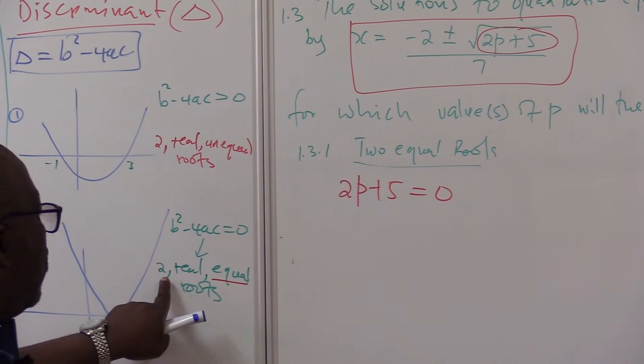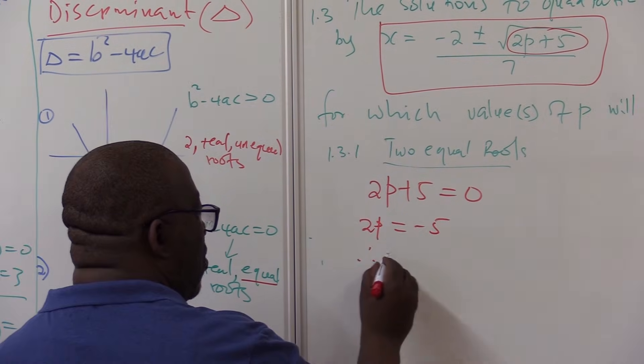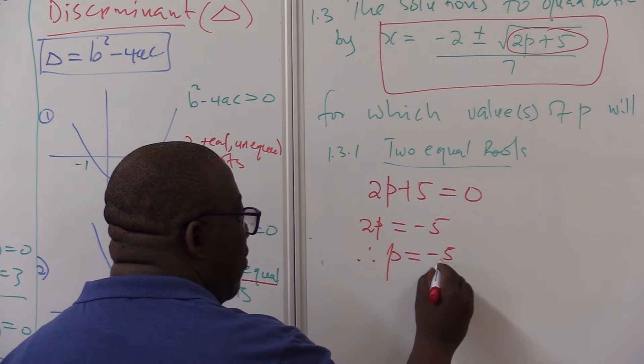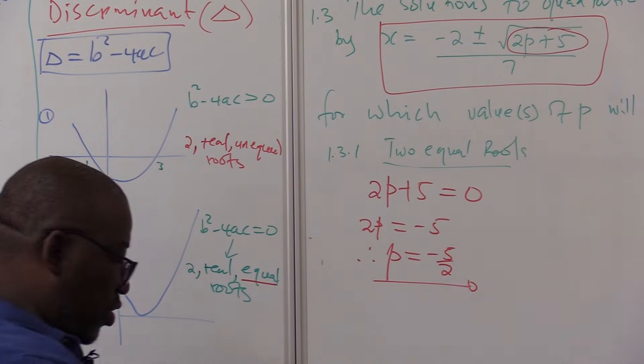Our 2p plus 5 must be equal to zero. Discriminant must be equal to zero for two real and equal roots. Therefore, p, you divide by 2 on both sides. It should be minus 5 over 2. That's how easy this section is, the nature of roots.